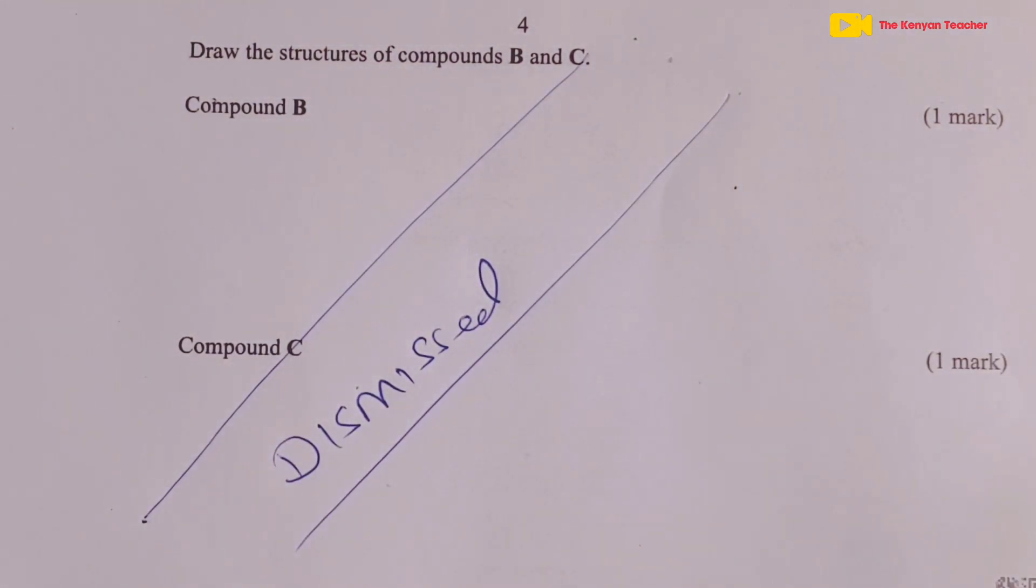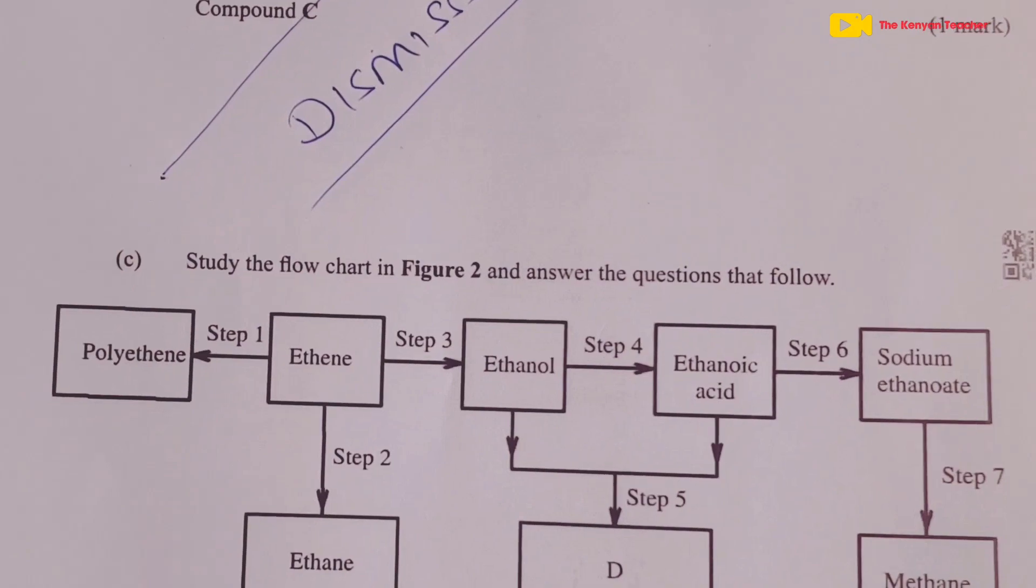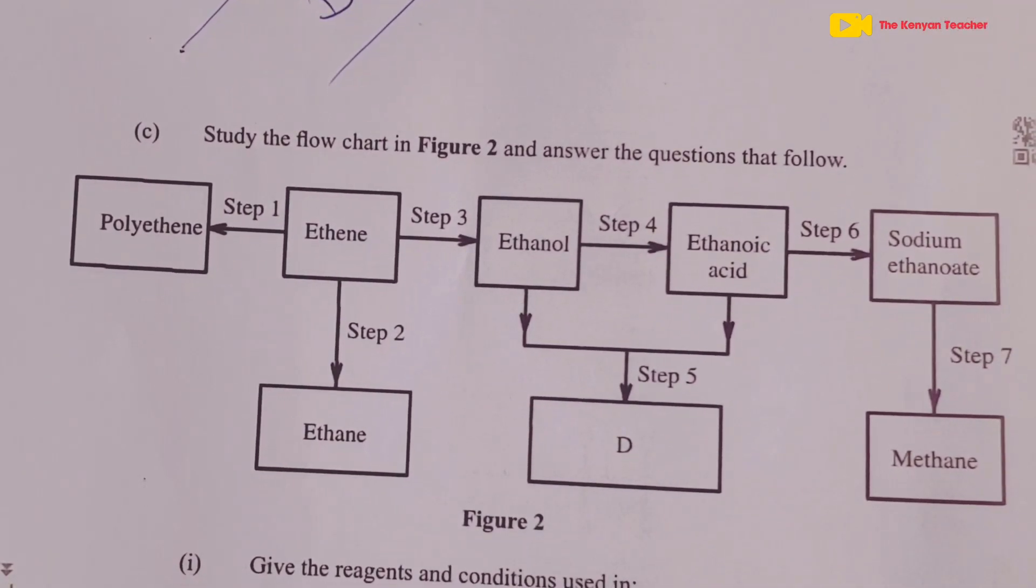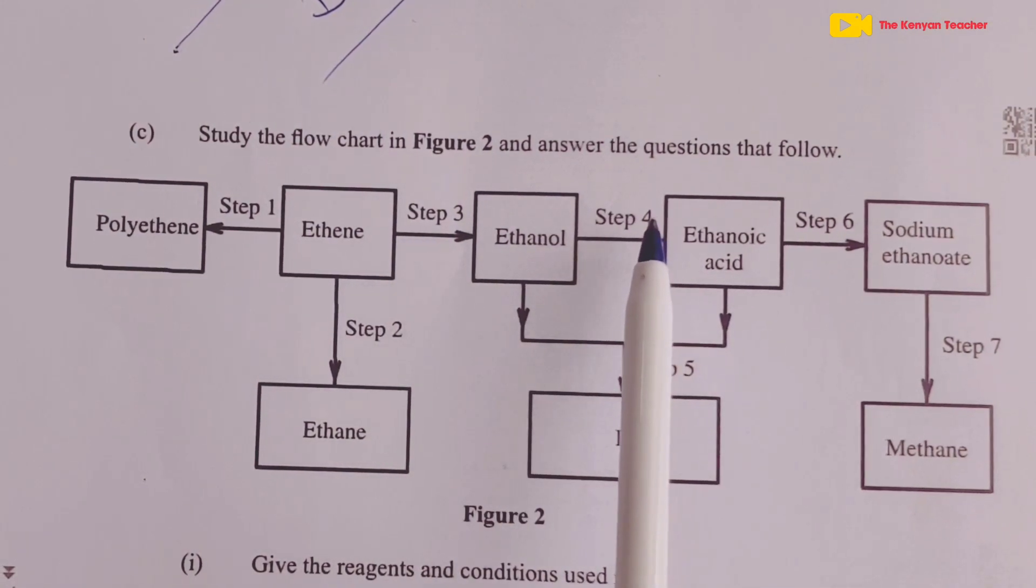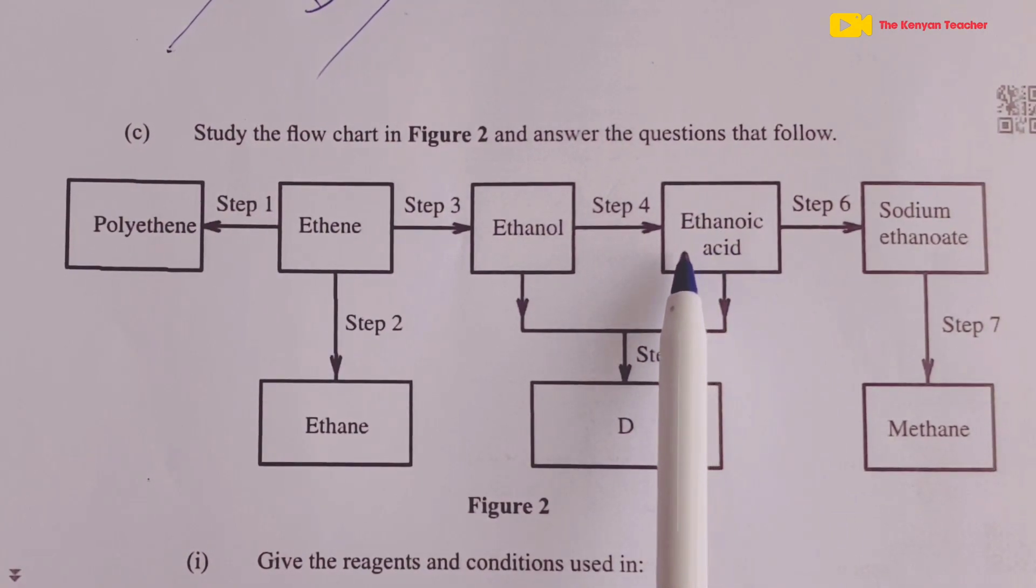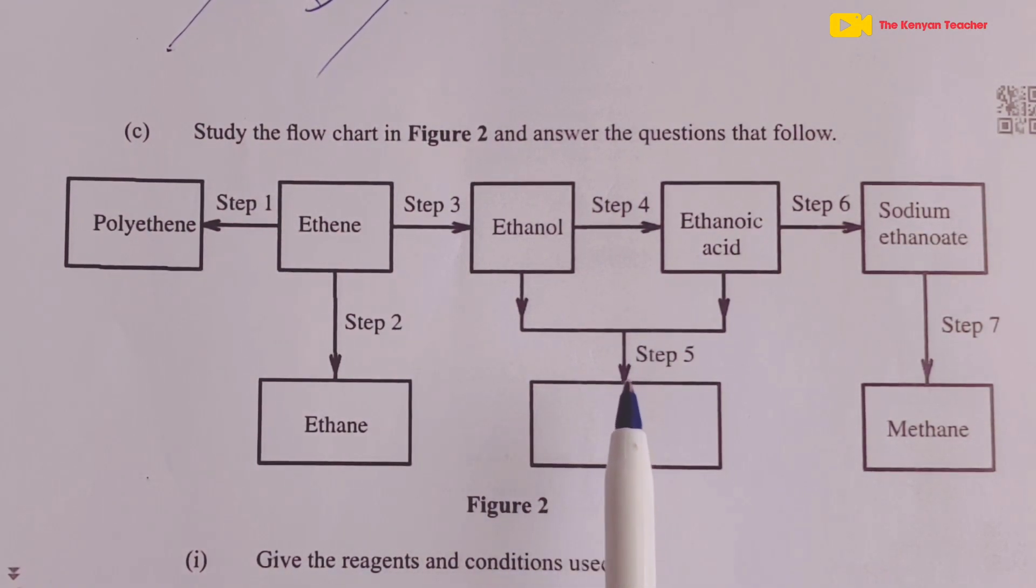It was only fair that the whole of question B was dismissed because of the wrong structure that was drawn. The two marks were redistributed to other questions within question 2. That leads us now to question 2 part C. We were told to study the flowchart in figure 2 and then use it to answer the questions that would follow. We always encourage our learners to study the scheme in totality before starting to answer the questions.